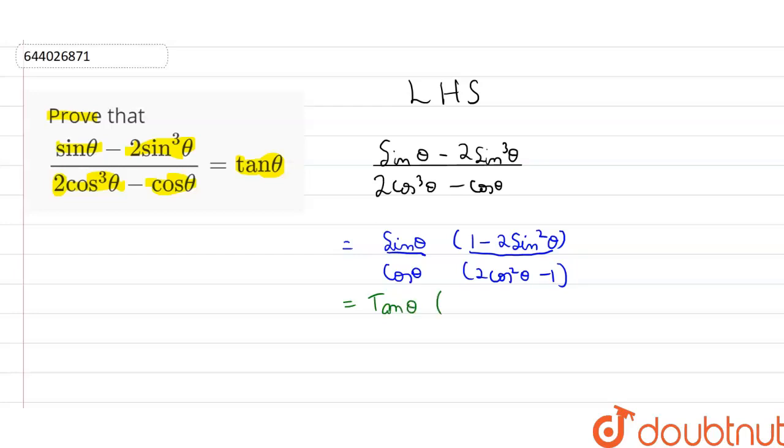Now, we know that sin squared theta can be written as 1 minus cos squared theta. So the numerator becomes 1 minus 2 into 1 minus cos squared theta, which equals